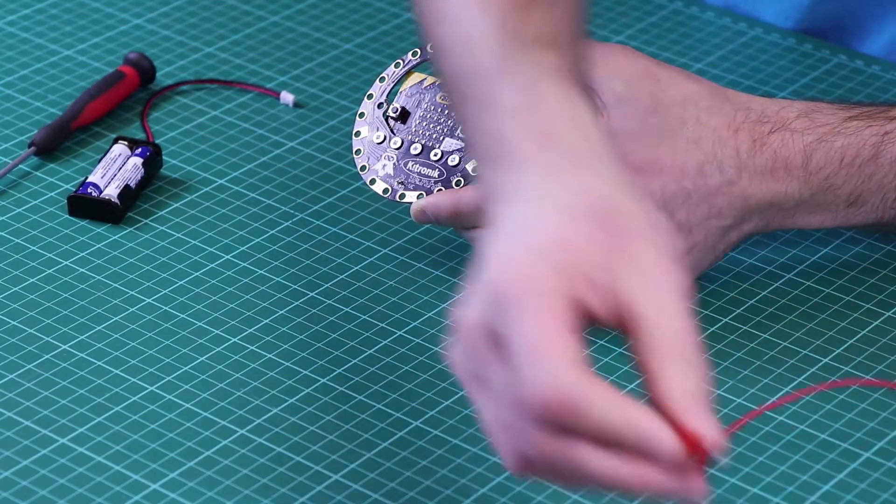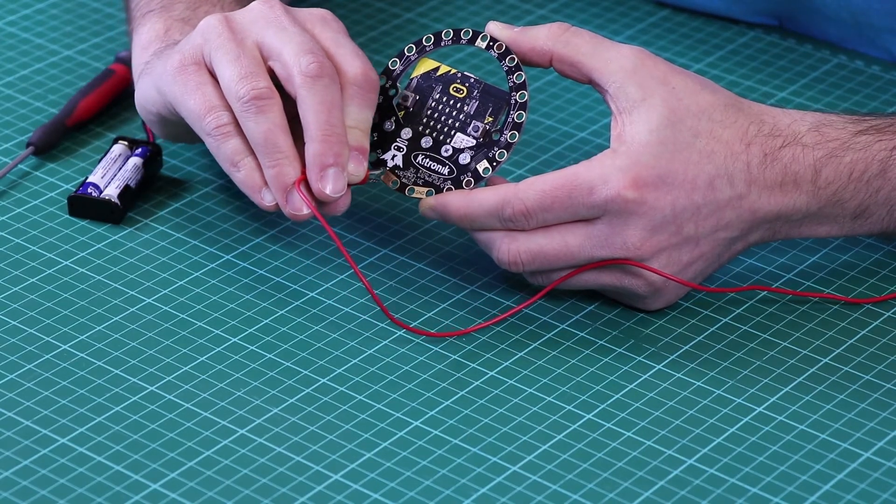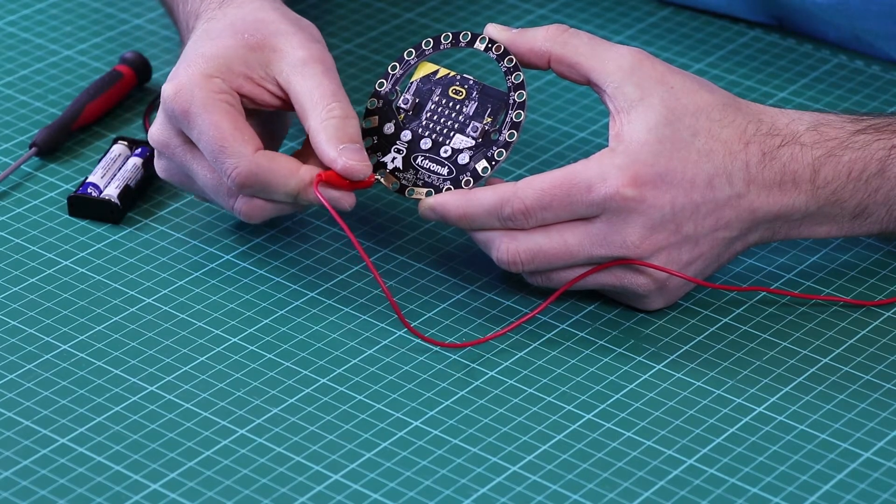If you're using things like crocodile clips and you need more than one 3-volt connection or ground connection, you can use these different points so you're not always sharing the same ring.